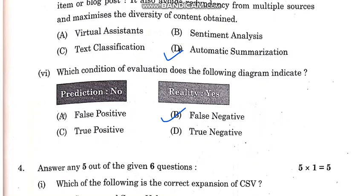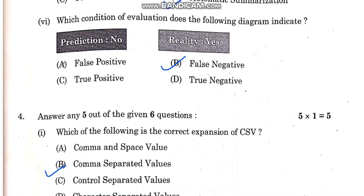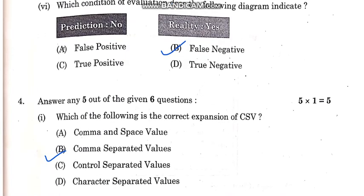In the context of evaluation, which condition does the following diagram indicate? The correct answer is B option: false negative.